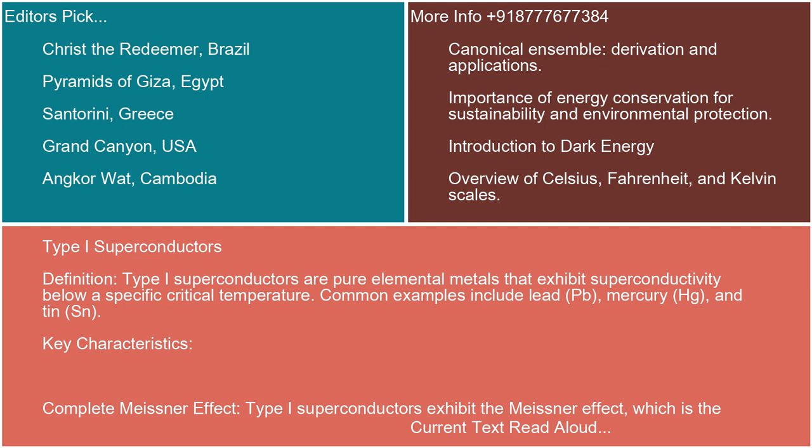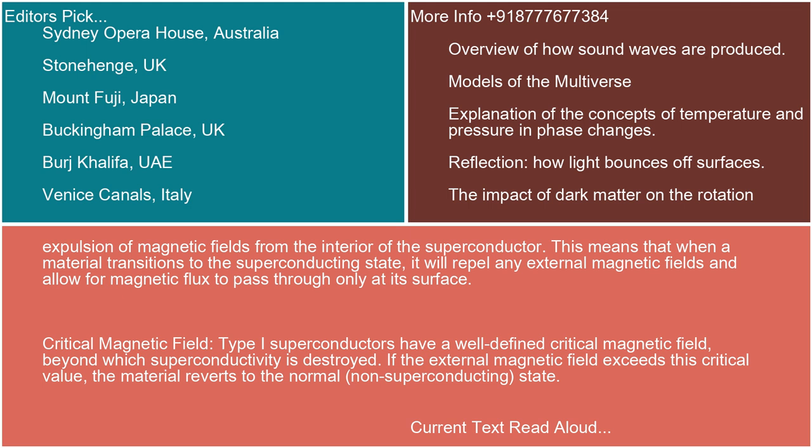Key characteristics. Complete Meissner effect: Type I superconductors exhibit the Meissner effect, which is the expulsion of magnetic fields from the interior of the superconductor. When a material transitions to the superconducting state, it will repel any external magnetic fields and allow magnetic flux to pass through only at its surface. Critical magnetic field: Type I superconductors have a well-defined critical magnetic field beyond which superconductivity is destroyed. If the external magnetic field exceeds this critical value, the material reverts to the normal, non-superconducting state.